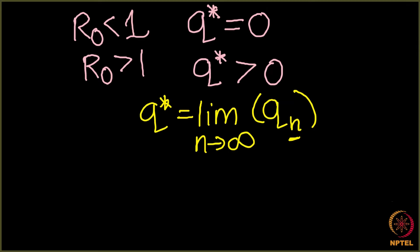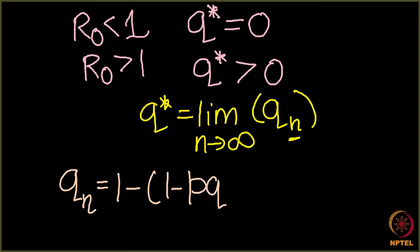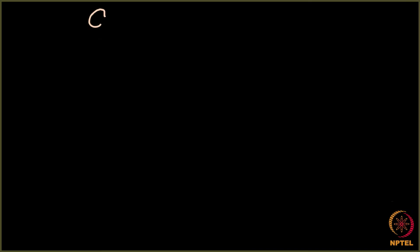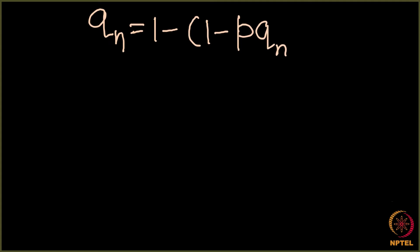In the last lecture we derived a formula for qn: qn = 1 - (1 - p·q_{n-1})^k. What we are going to do in this lecture is analyze this formula further.